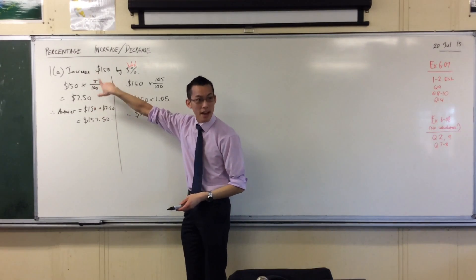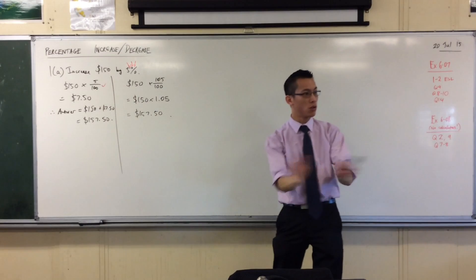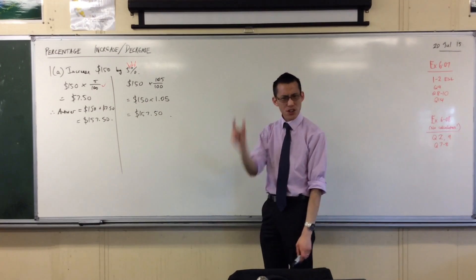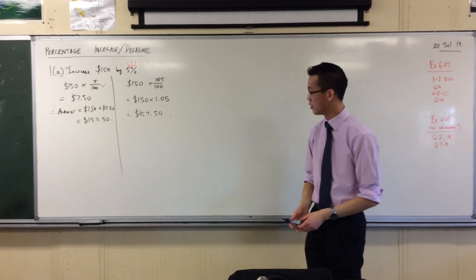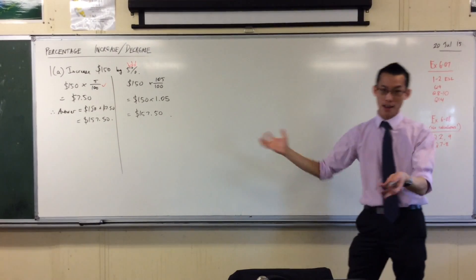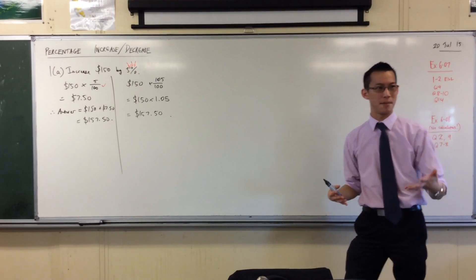Any questions on that? Method 1, you've worked out the increase. Method 2, you just do it all in one hit. This is ever so slightly quicker, isn't it? Because we're doing one step instead of two. But either one is fine. Either one will land you with the right answer because they're both different ways of getting to the same place.